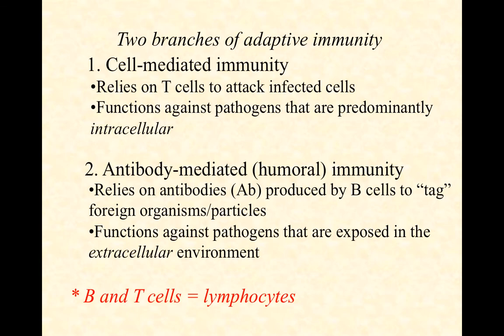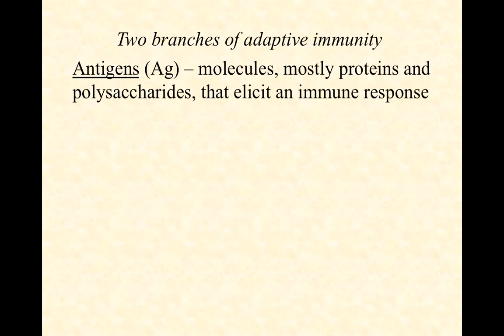One last thing to cover in this overview are antigens, abbreviated AG. Antibodies are abbreviated AB. An antigen is something that generates an antibody response — in other words, it stimulates an immune response. These are molecules, mostly proteins and polysaccharides, with proteins being better antigens, that elicit an immune response. So what kinds of proteins and polysaccharides would be exposed so that B cells could begin producing antibodies directly against them?